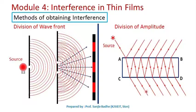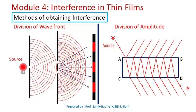These light rays constitute the reflected system. These light waves can interfere with each other to give rise to an interference pattern, which can be observed in the reflected direction. The light rays in the transmitted system can also interfere with each other, and that interference pattern can be observed from the transmitted direction.